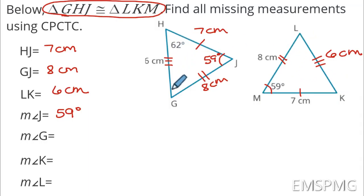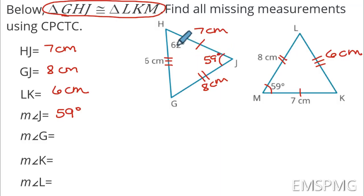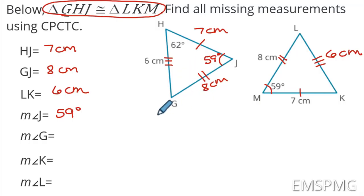The last side length is LK. Hopefully you're realizing by process of elimination it should be the last value we haven't used yet. LK is the first and second letters, and G and H are the first and second letters in the first triangle. I'll mark that with three dashes on both. So LK is 6 centimeters. I now have all my side lengths and I'm ready to move to angle measures.